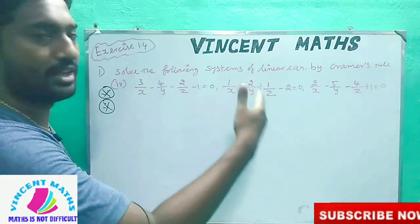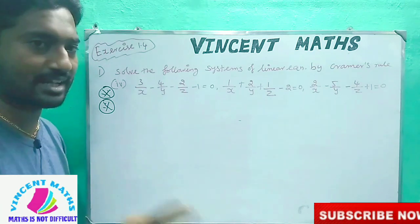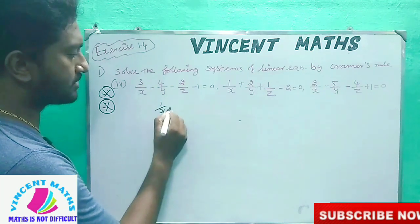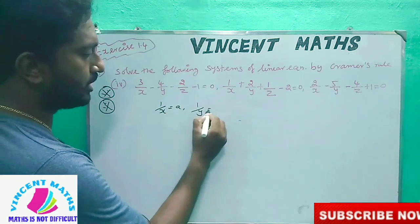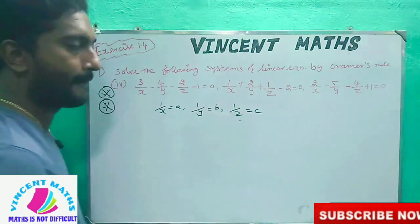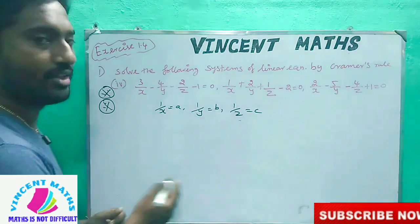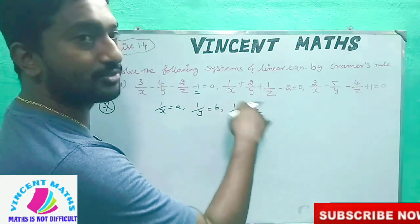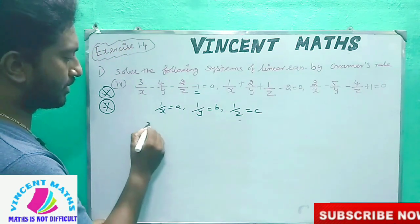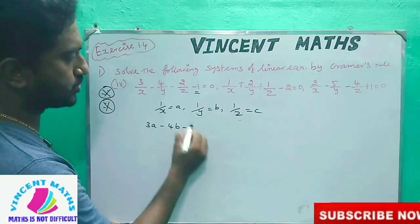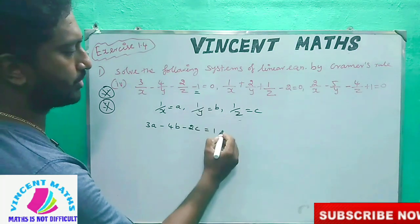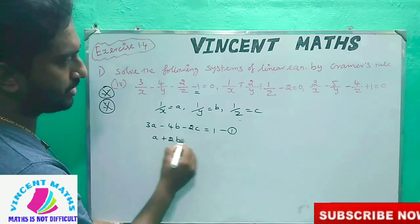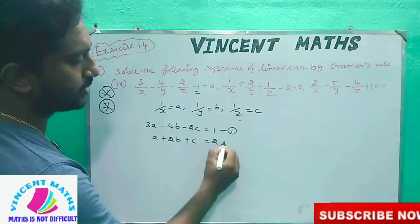We will talk about the second solution and whole numbers. We are doing A, B, and C. The first equation is: 3A minus 4B minus 2C equal to 1. The second equation is: A plus 2B plus C equal to 2.